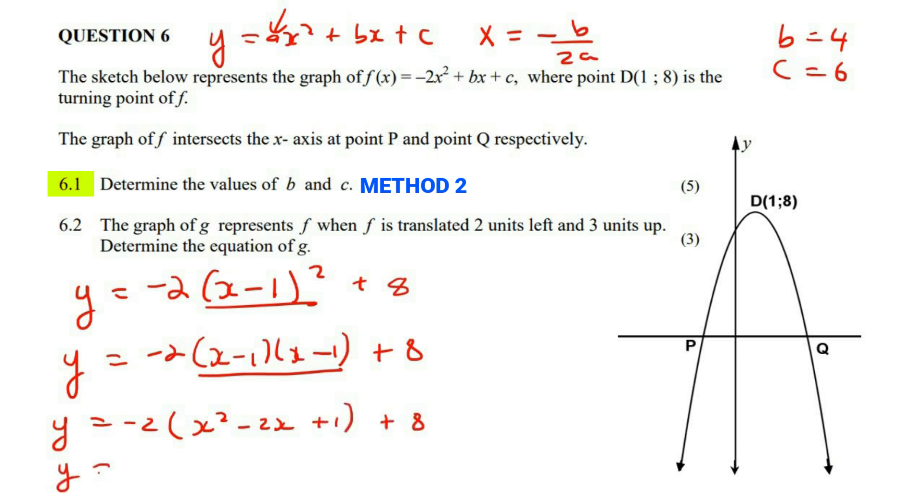Now multiply the minus two in, so negative two x squared, plus four x, take away two, plus eight.